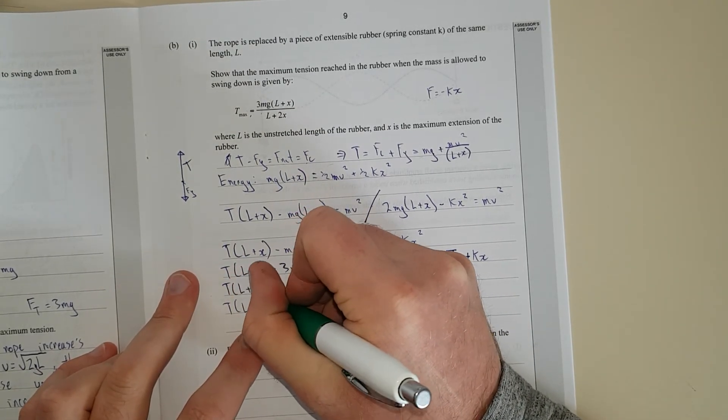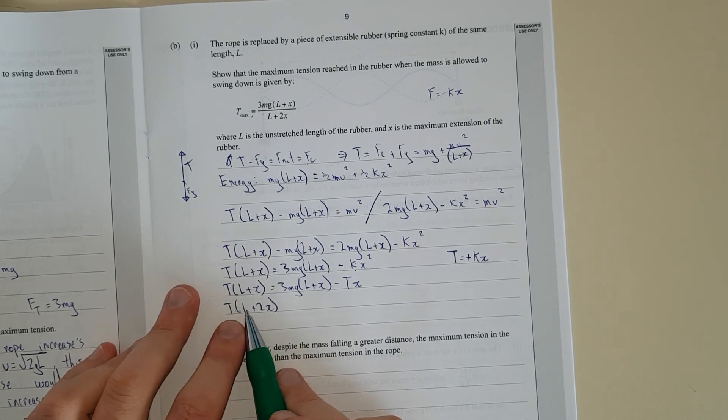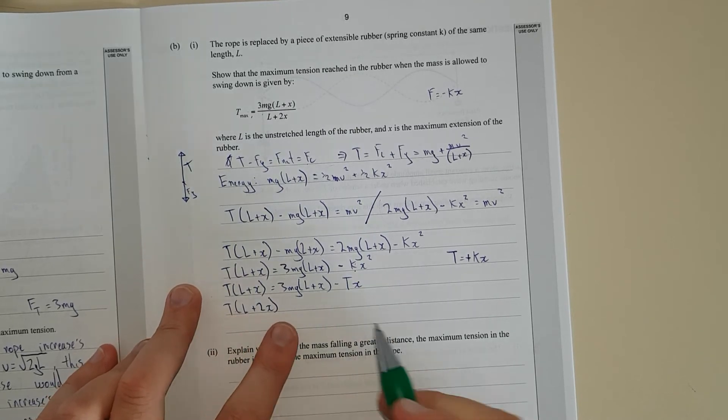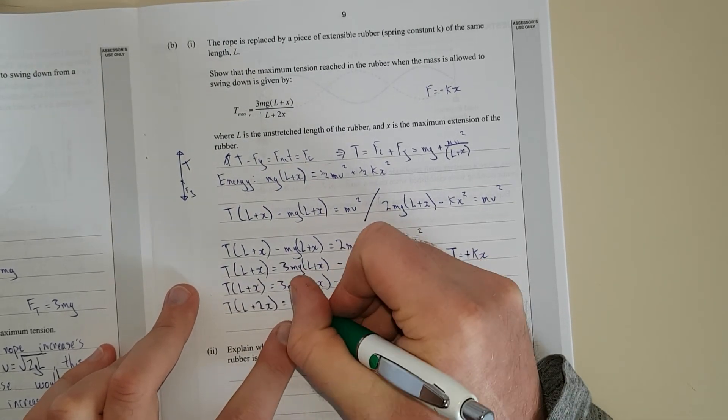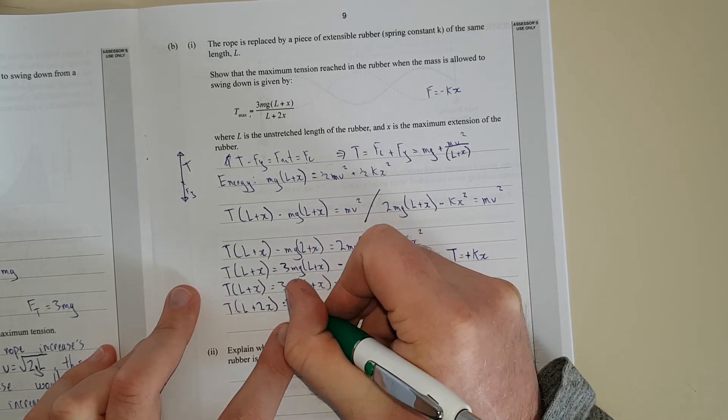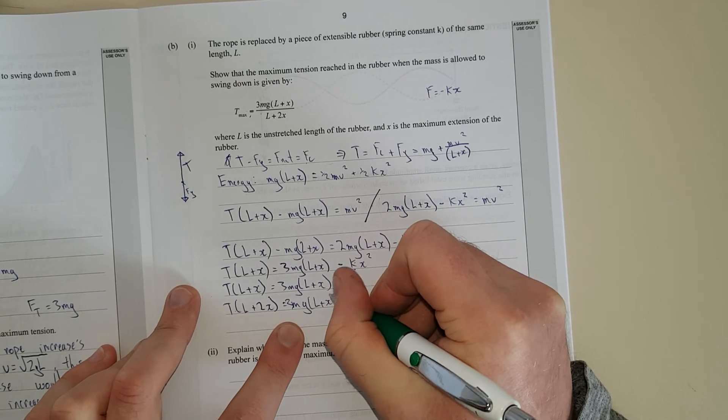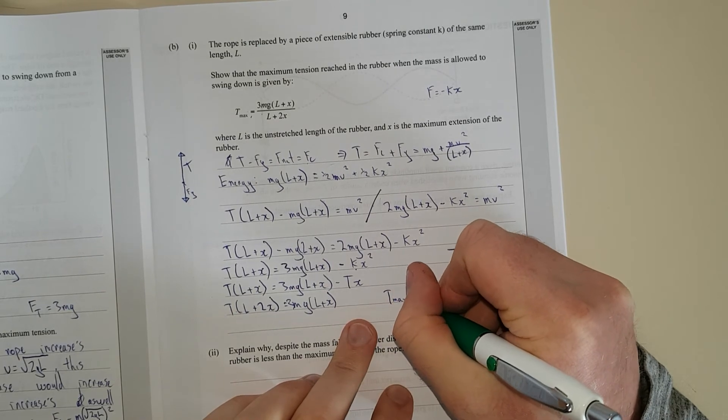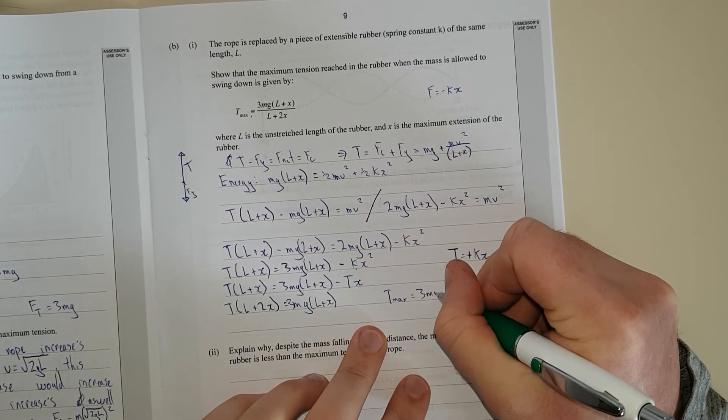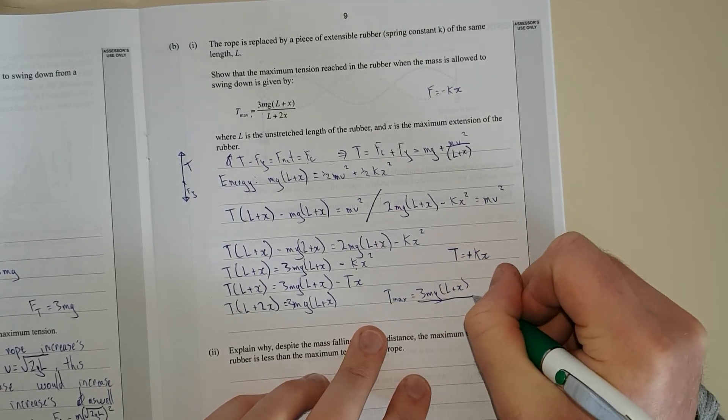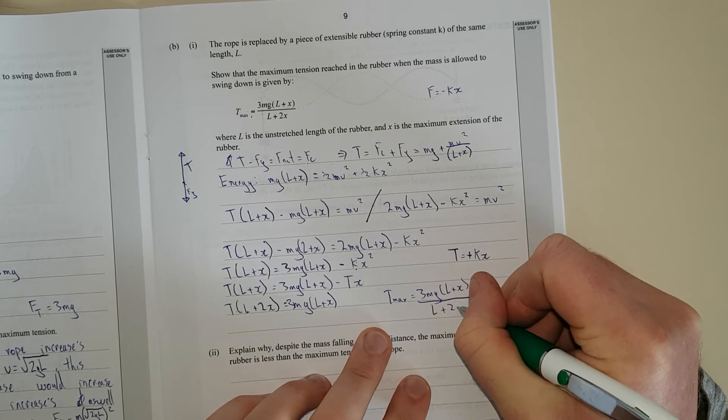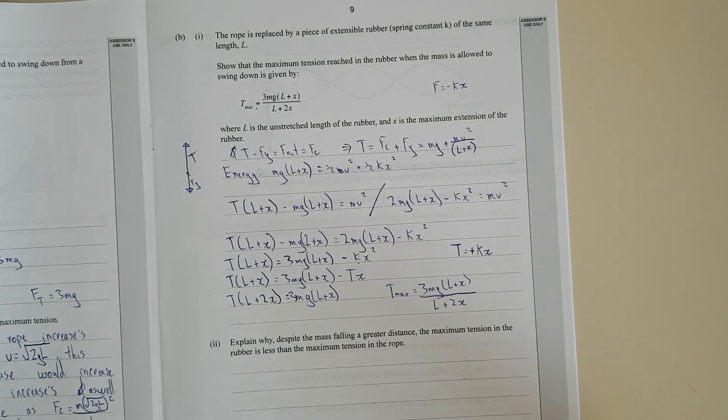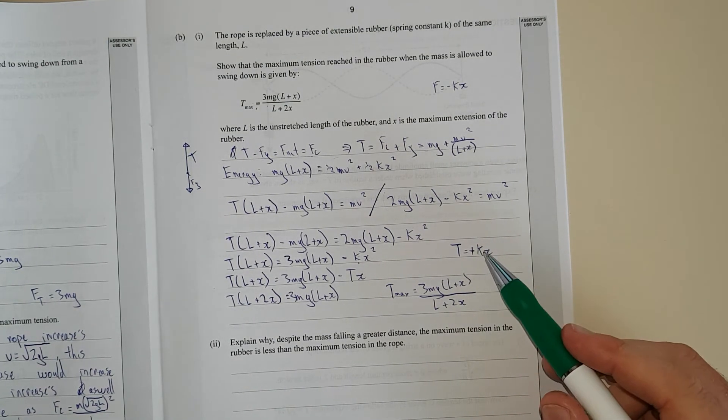So we have tension L plus, now what I'm doing is this would be T bracket L plus X plus TX, and I'm bringing in the common factor, so I'm pulling out the common factor of all of it and putting it to the front and just going plus 2X. And that's going to be equal to 3Mg L plus X. And now we can see pretty clearly that Tmax is equal to 3Mg L plus X divided by L plus 2X. There we go.